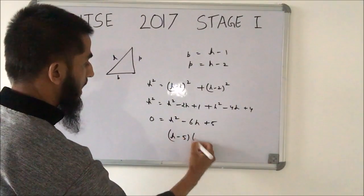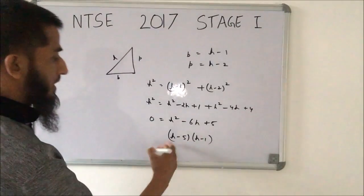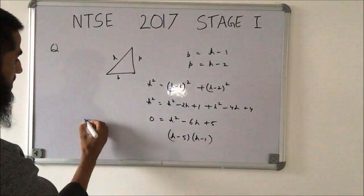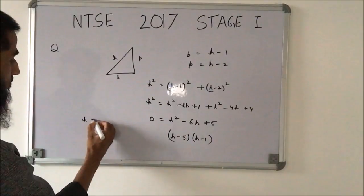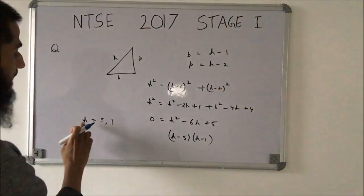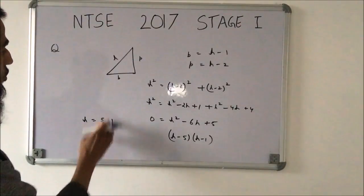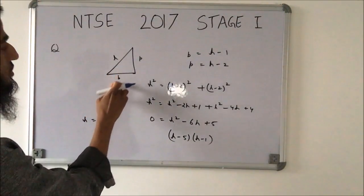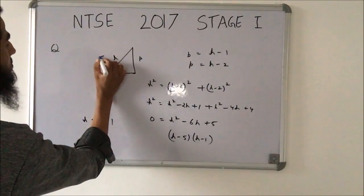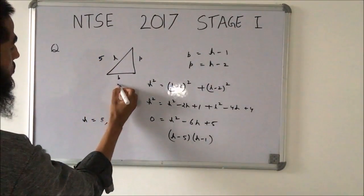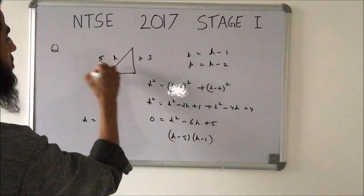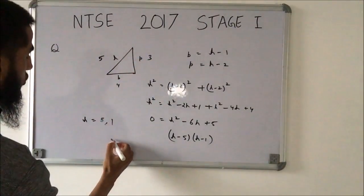Factorizing gives (h−5)(h−1) = 0, so h = 5 or h = 1. h cannot equal 1 because that makes the base 0 and perpendicular negative. So h = 5, base = 4, perpendicular = 3. The perimeter is 5 + 4 + 3 = 12.